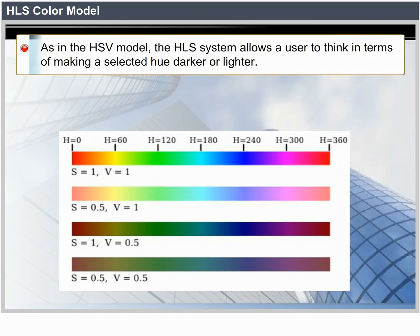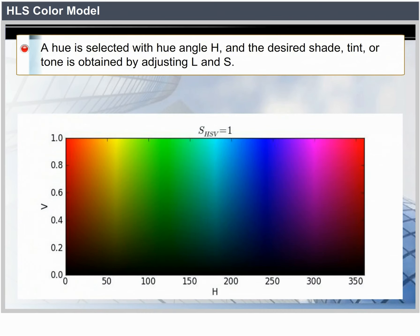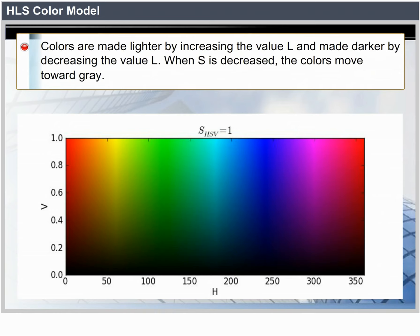As in the HSV model, the HLS system allows the user to think in terms of making a selected hue darker or lighter. A hue is selected with the hue angle H, and the desired shade, tint, or tone is obtained by adjusting L and S. Colors are made lighter by increasing L and darker by decreasing L. When S is decreased, the colors move towards gray.